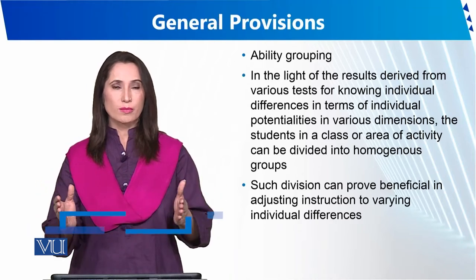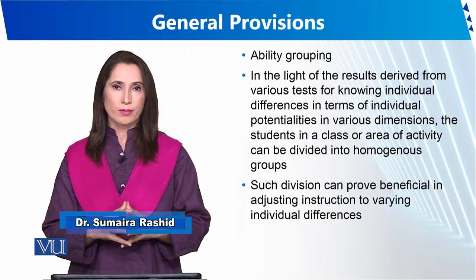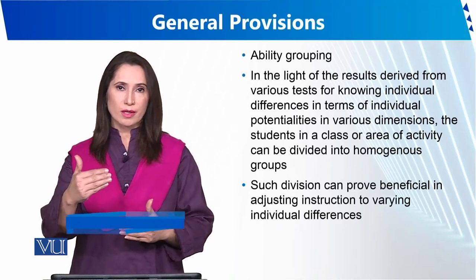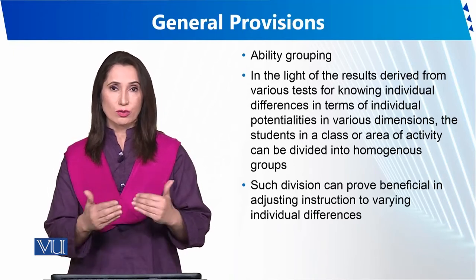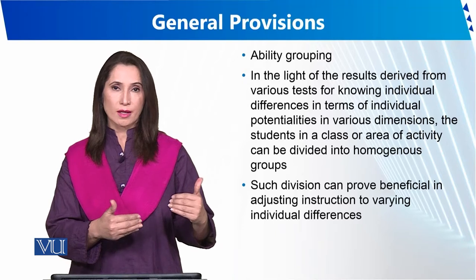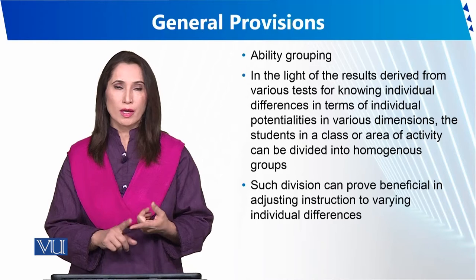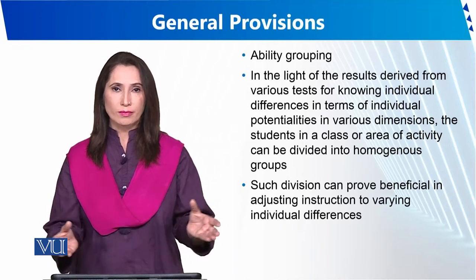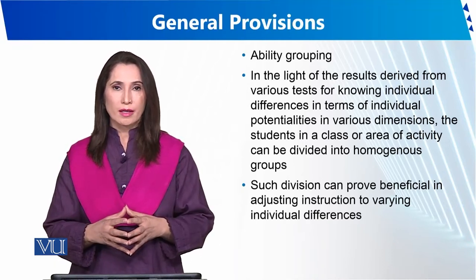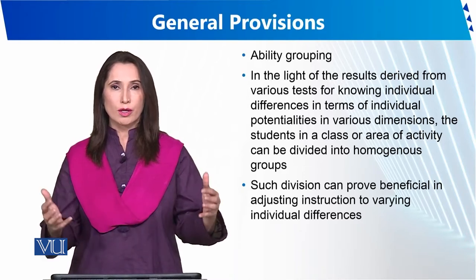In ability grouping, you can group genius learners, average learners, and slow learners. Within each group, you can assign a leader. The group can go through the course material together, and students will learn through this process. The group should have an authoritative leader.